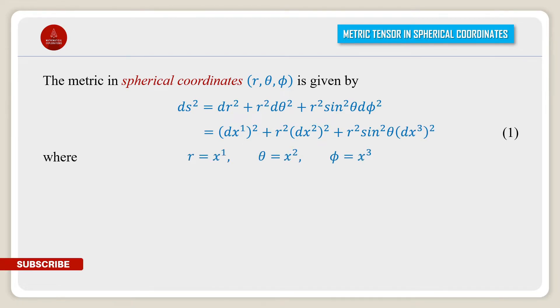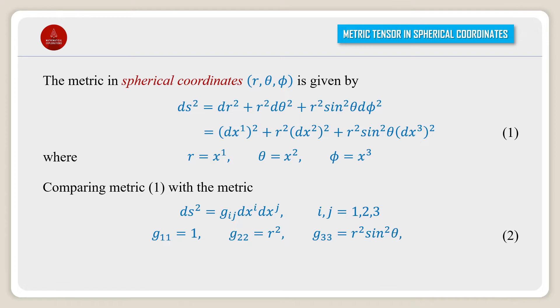Where r = x¹, θ = x², and φ = x³. Comparing metric (1) with the metric ds² = gᵢⱼ dxⁱ dxʲ, where i and j vary from 1, 2, 3, we get g₁₁ = 1.